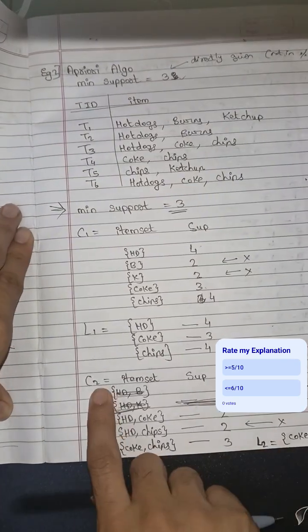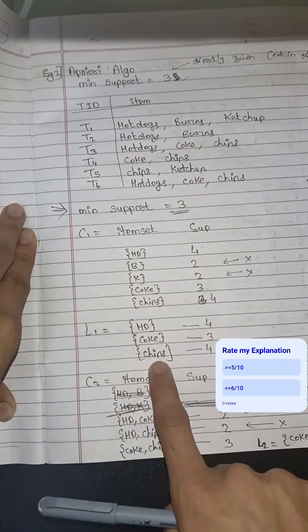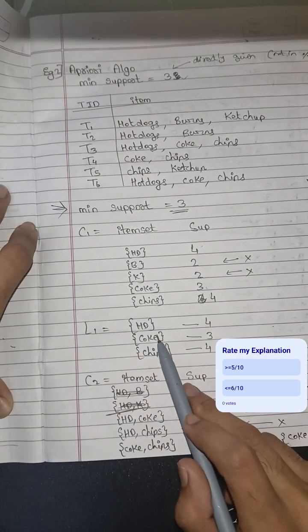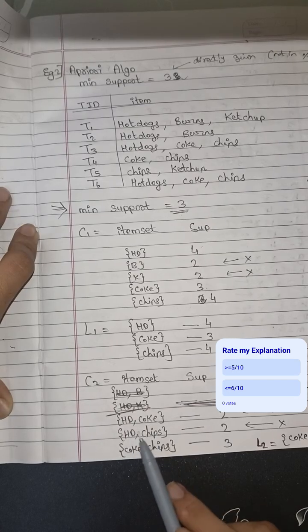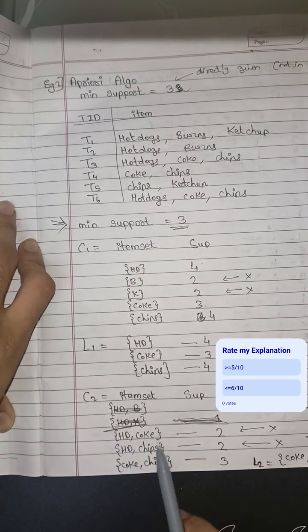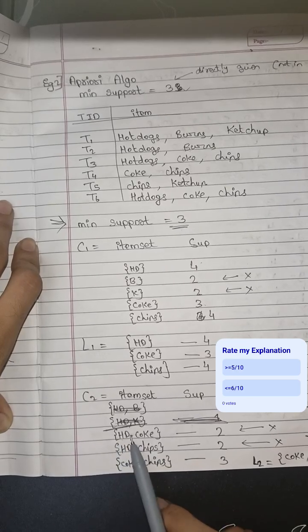Now in second we will make combination of 2 out of these 3, which is hot dogs-Coke, hot dogs-chips, Coke and chips. How many times both are coming?